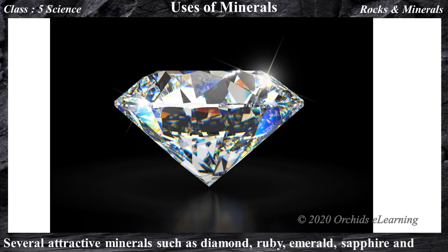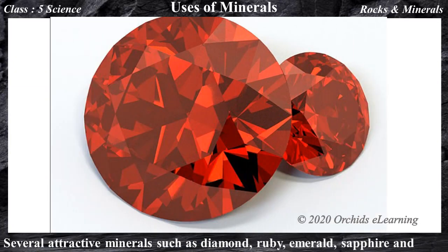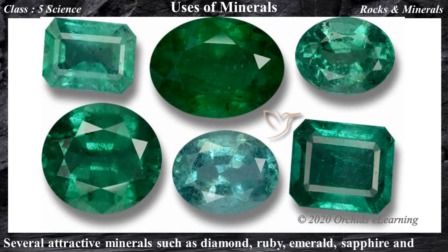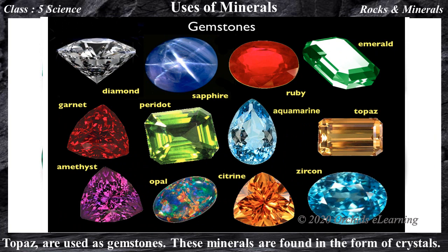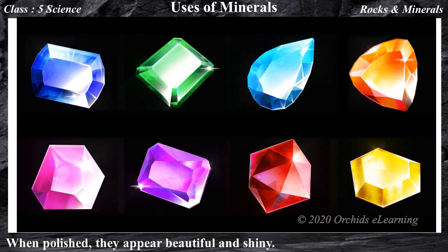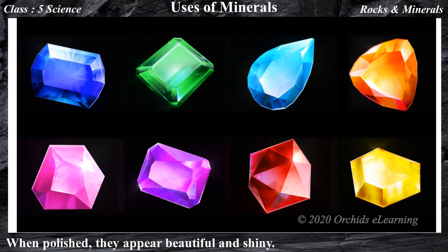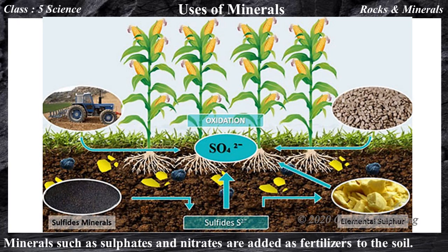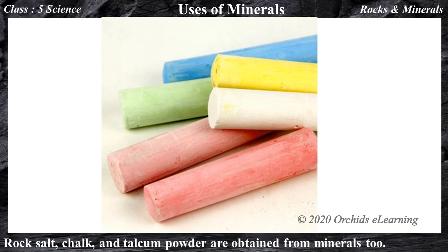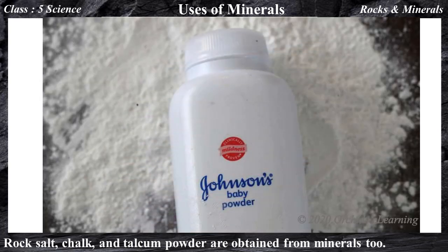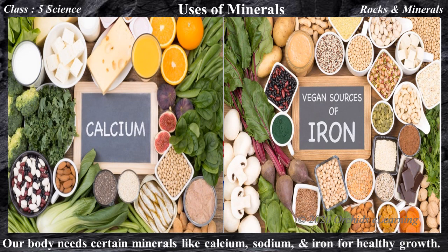Several attractive minerals such as diamond, ruby, emerald, sapphire, and topaz are used as gemstones. These minerals are found in the form of crystals. When polished, they appear beautiful and shiny. Minerals such as sulfates and nitrates are added as fertilizers to the soil. Rock salt, chalk, and talcum powder are obtained from minerals too. Our body needs certain minerals like calcium, sodium, and iron for healthy growth.